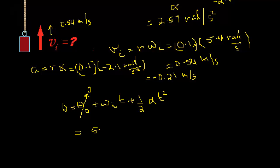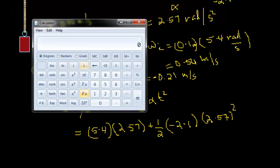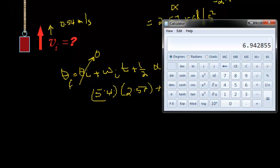This would equal 5.4 times, we already know the time, times 2.57 plus one half times negative 2.1 radians per second squared times t squared, which is 2.57 squared. Let's get the calculator. 6.94 radians.